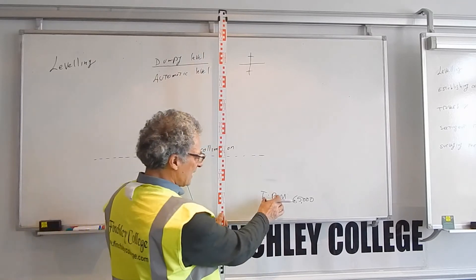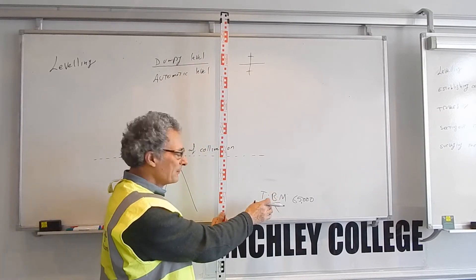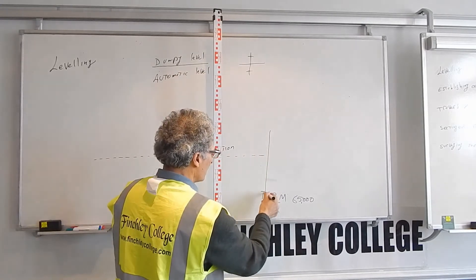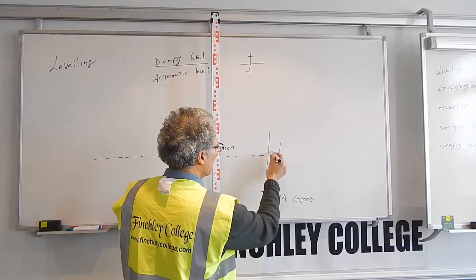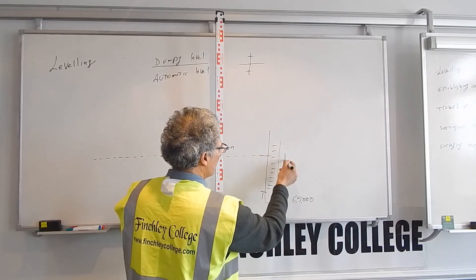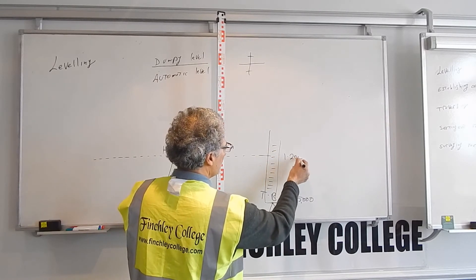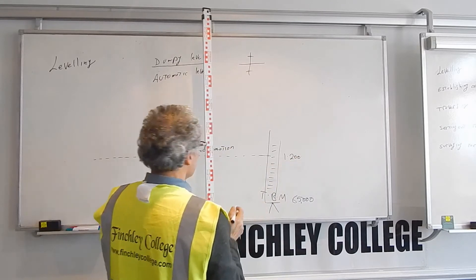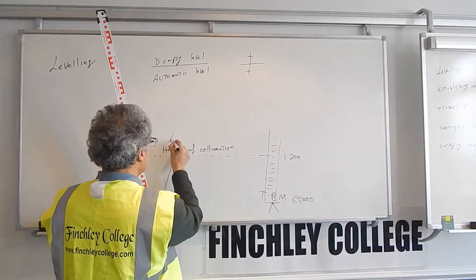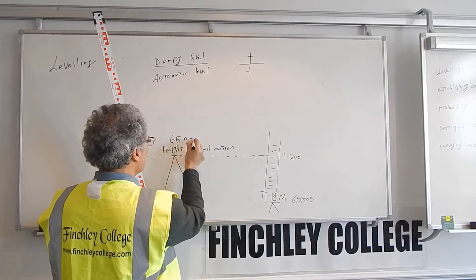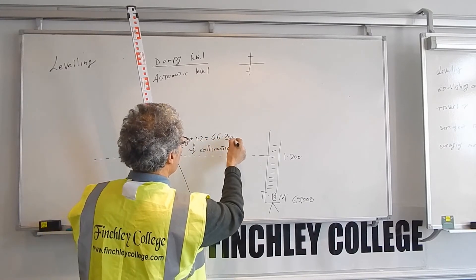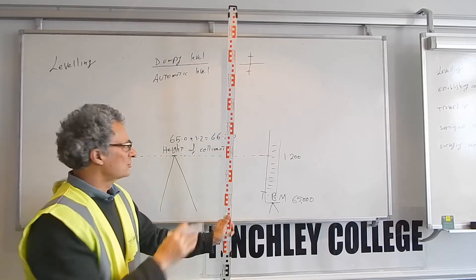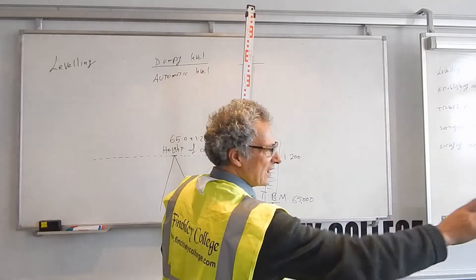If I hold the staff on the TBM and take a reading, for example 1.2 meters on the staff, then the height of collimation will be 65 plus 1.2, which equals 66.2. That will be the height of the instrument.